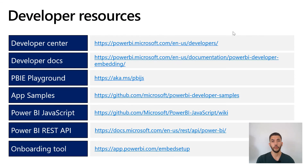Here are some developer resources: the developer center, developer documentation, the Embedded Playground, and samples — you can download a sample, insert your workspace ID, report ID, tenant, application ID, and application secret to get up and running quickly. We also have the JavaScript wiki, SDK documentation, and our onboarding tool. I hope you enjoyed this session — this was Power BI Embedded and APIs. Thank you very much.